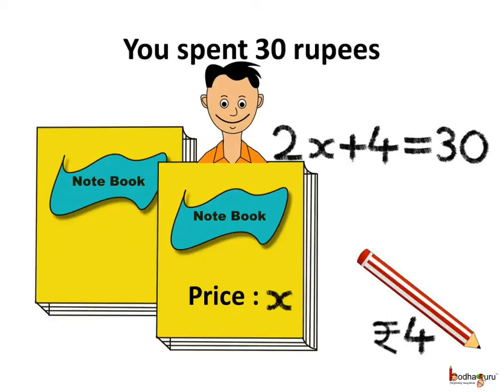Assume you had spent 30 rupees in buying the things. So we can say the value of the expression 2x plus 4 is equal to 30. Thus, every algebraic expression can be assigned a value as every variable in it has a value. Here, the value of expression 2x plus 4 is equal to 30.